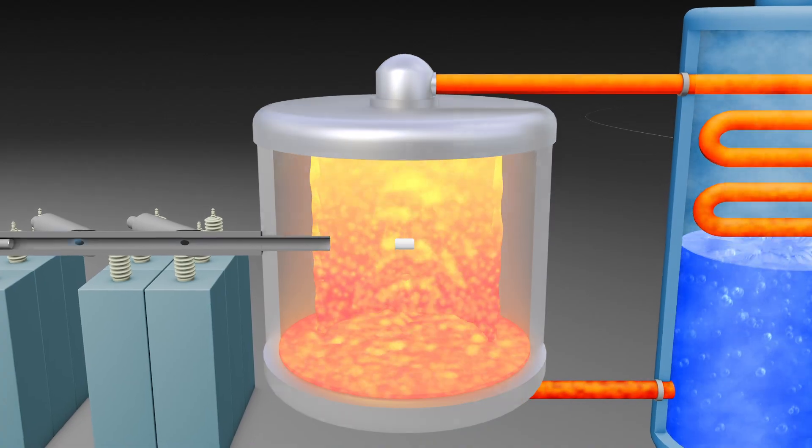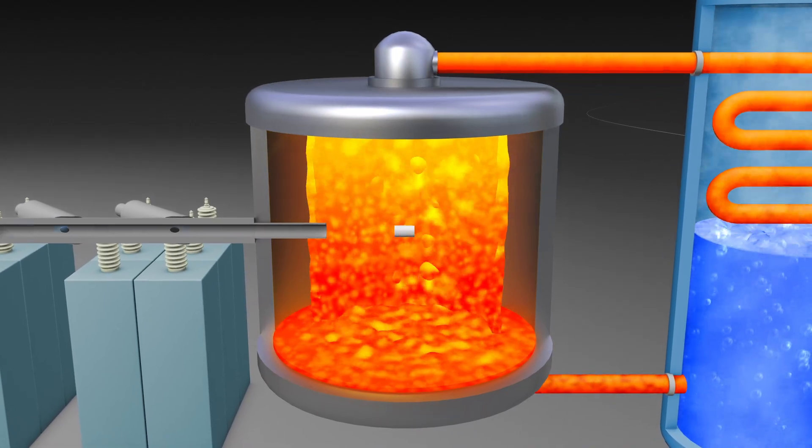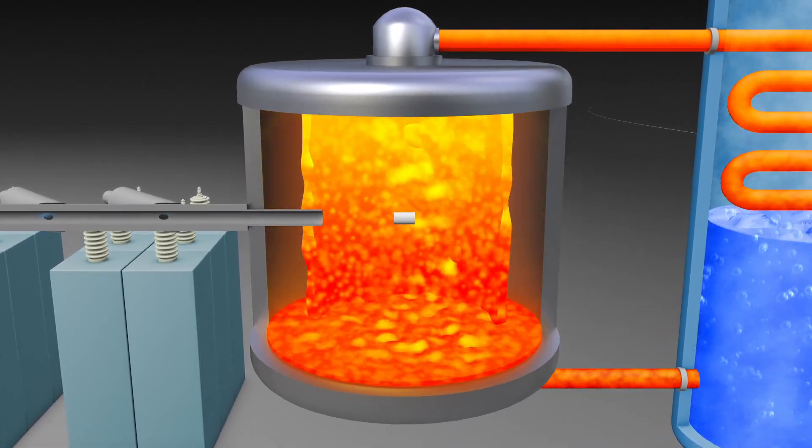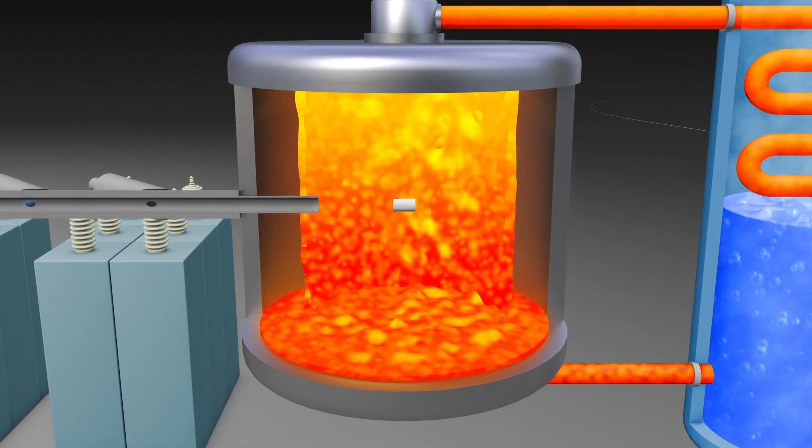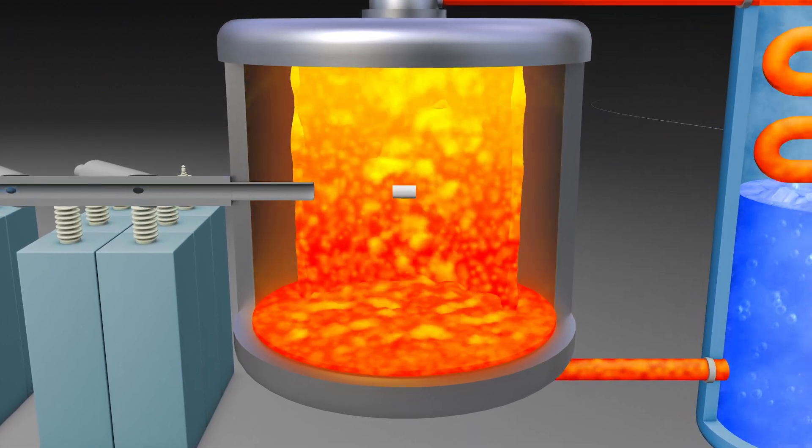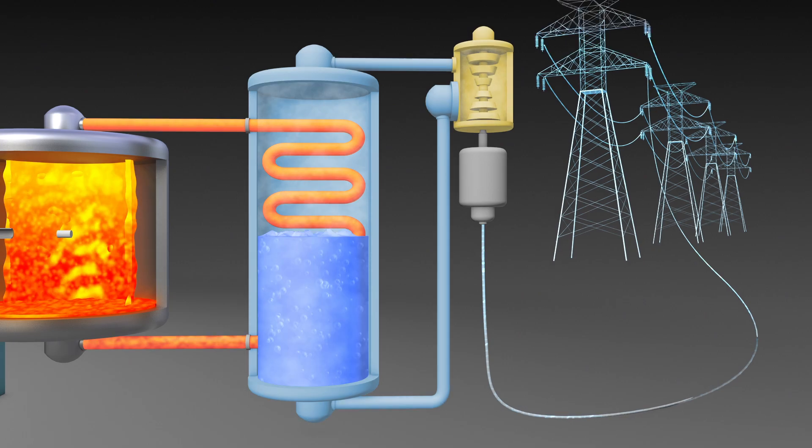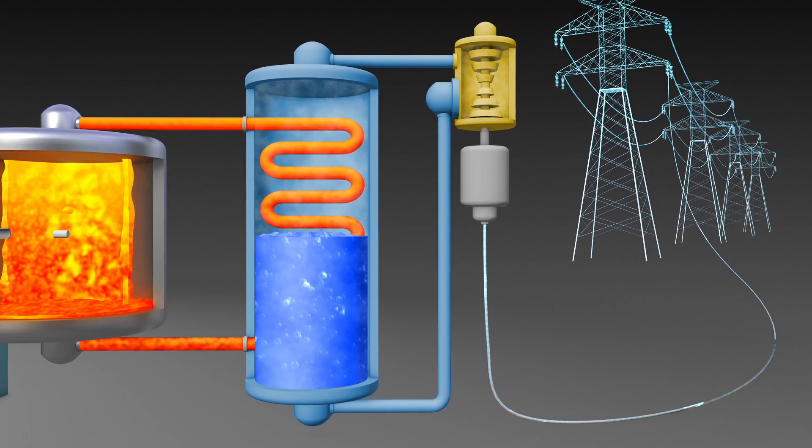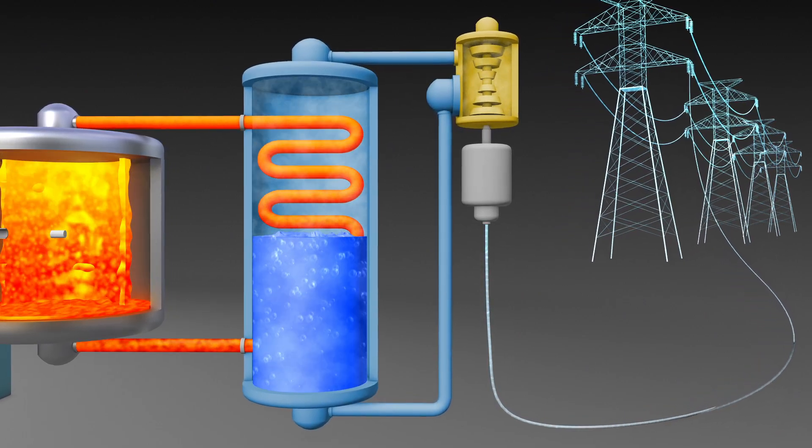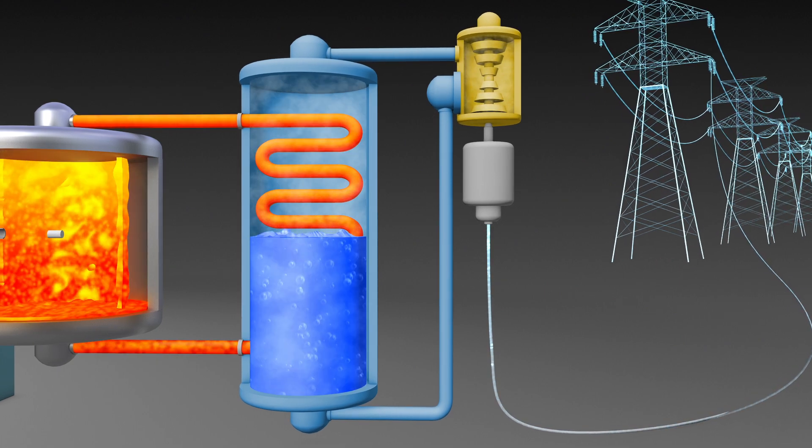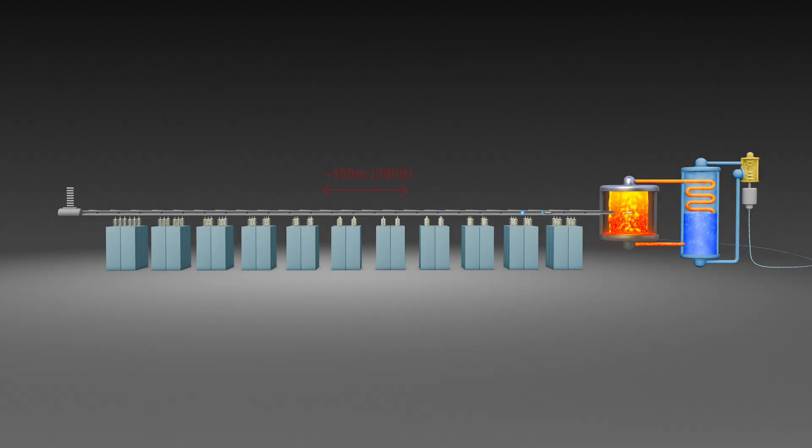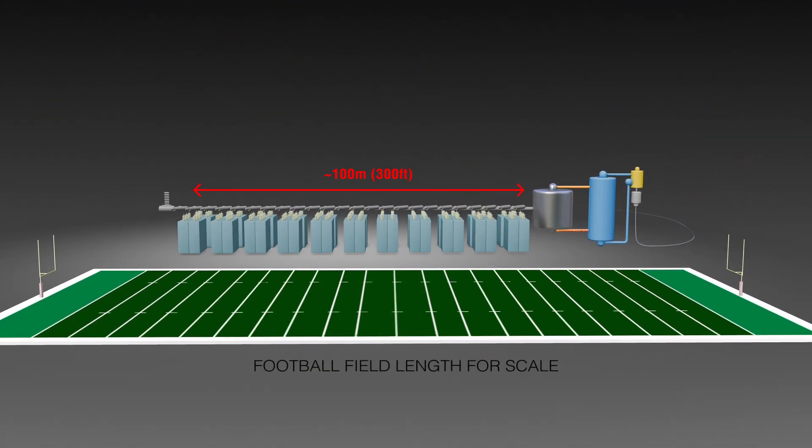Third, a stainless steel reaction chamber with a liquid first wall to absorb the energy from each fusion pulse. And finally, a conventional balance of plant with a heat exchanger, steam turbine, and generator.